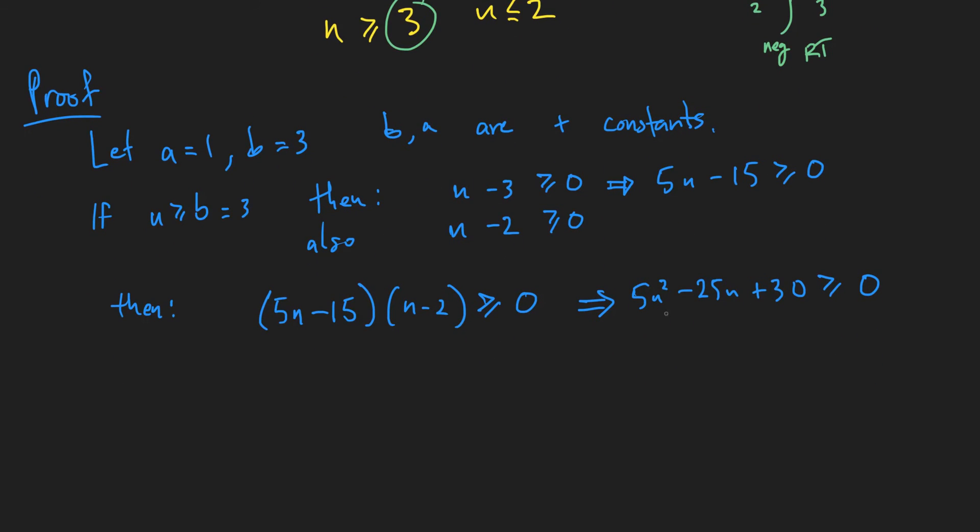And we also, we can keep going further, and we can add n squared to both sides, and it should still be the same. So we have 6n squared minus 25n plus 30 is greater than or equal to n squared.